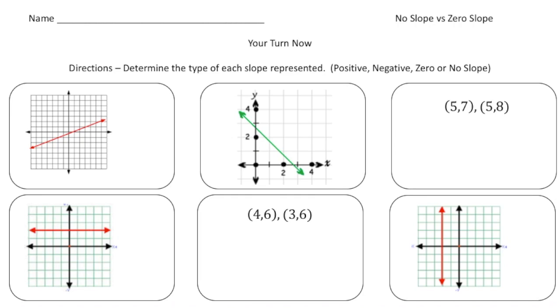Welcome back. Let's say I did it on these practice problems. So it says, determine the type of each slope represented. It's either going to be positive, negative, zero, or no slope. Well, this first slope is increasing, right? It's going up the hill. So this is going to be a positive slope. The second one is going downhill. So that's a sign that's going to be a negative slope.